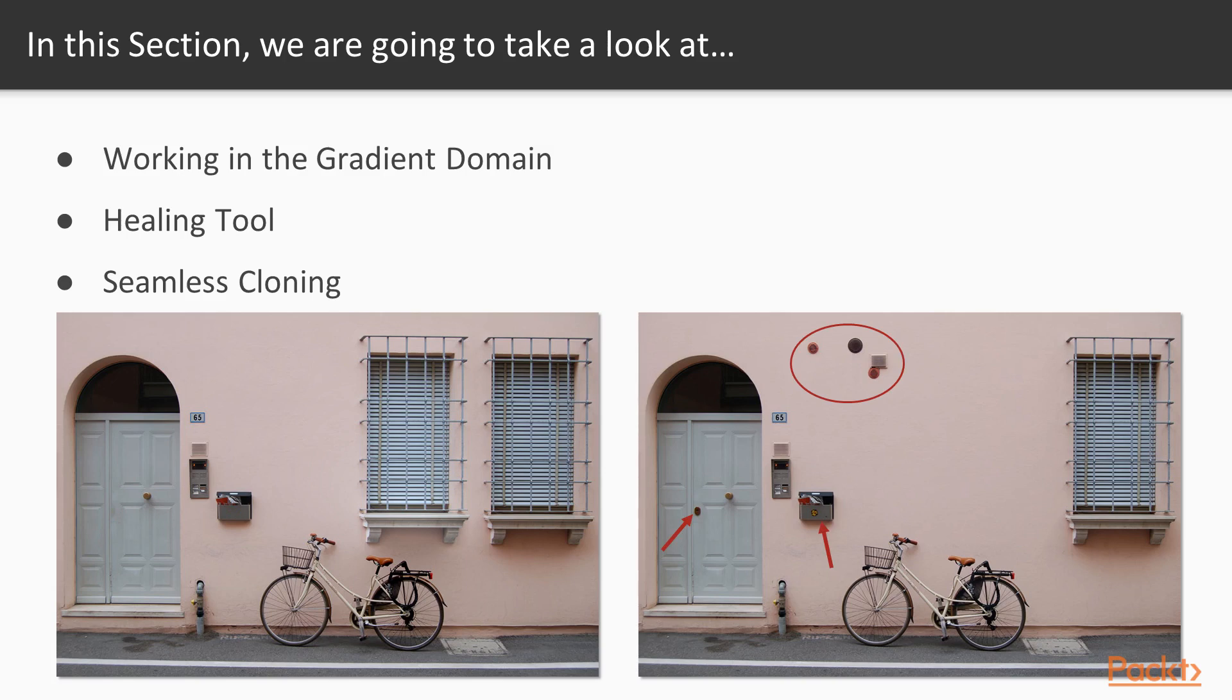Seamless Cloning allows us to seamlessly transfer image regions from one part of an image to another or between two images. Contrary to simple pixel copying, the destination boundary colors smoothly flow into the copied region creating a seamless transition.